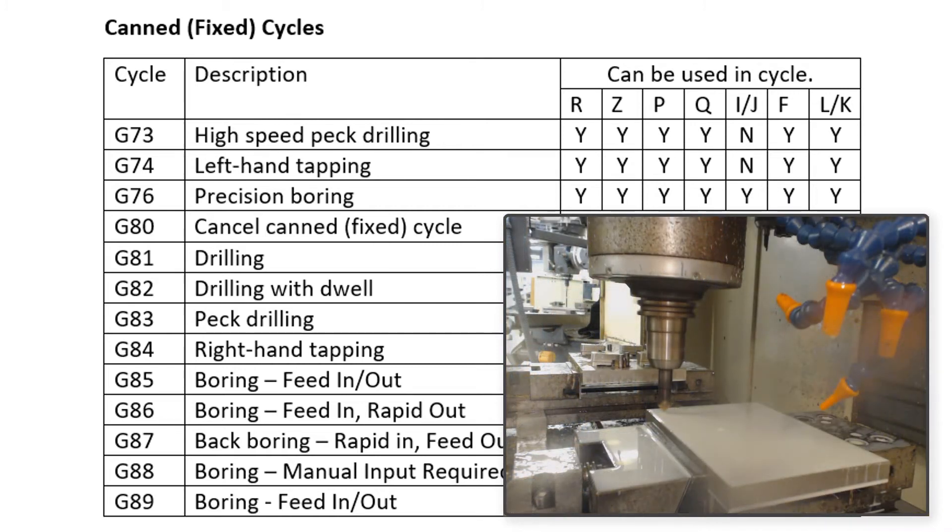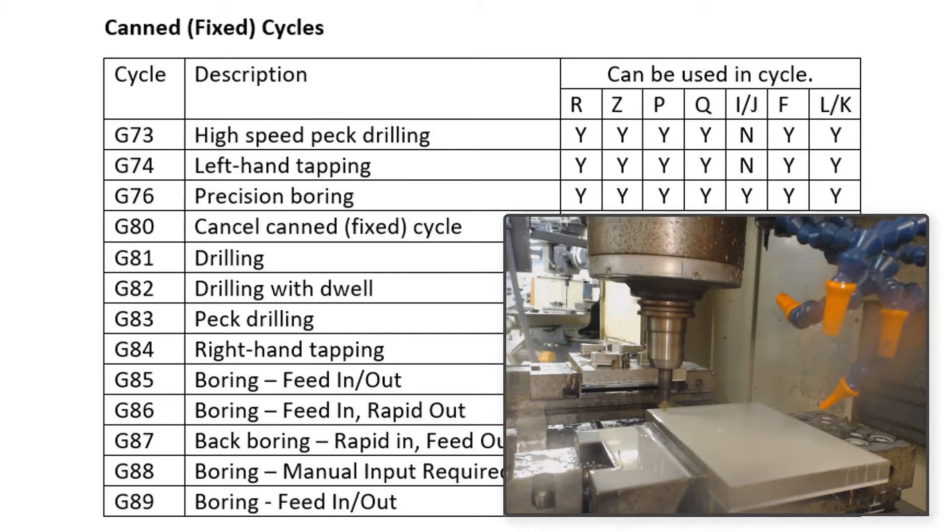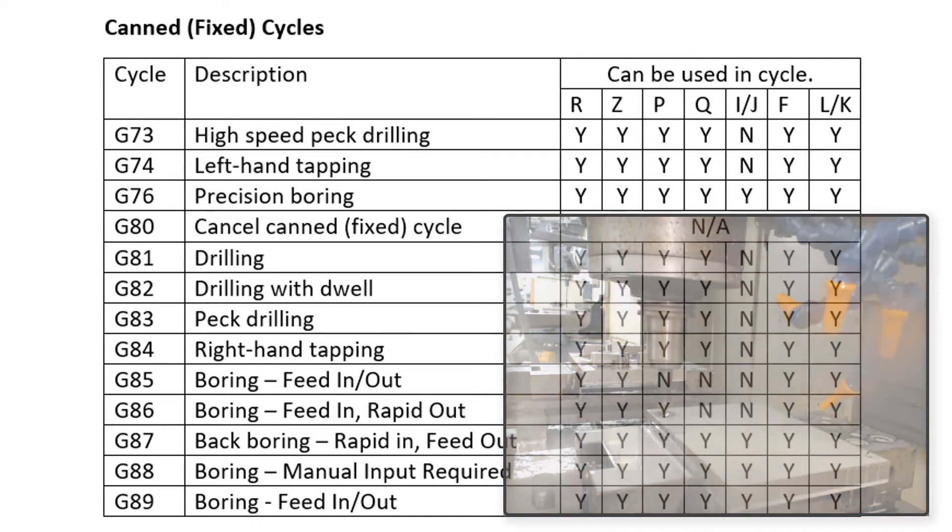G82 functions the same as G81 but allows for a dwell or pause to be programmed once the Z depth has been reached. This cycle is often used when spot drilling.